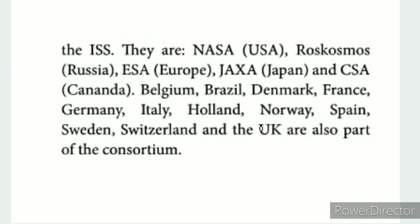An international collaboration of five different space agencies from sixteen countries provides maintenance and operation of the ISS. The five agencies are: NASA from the USA, the Russian space agency, ESA from Europe, JAXA from Japan, and CSA from Canada.